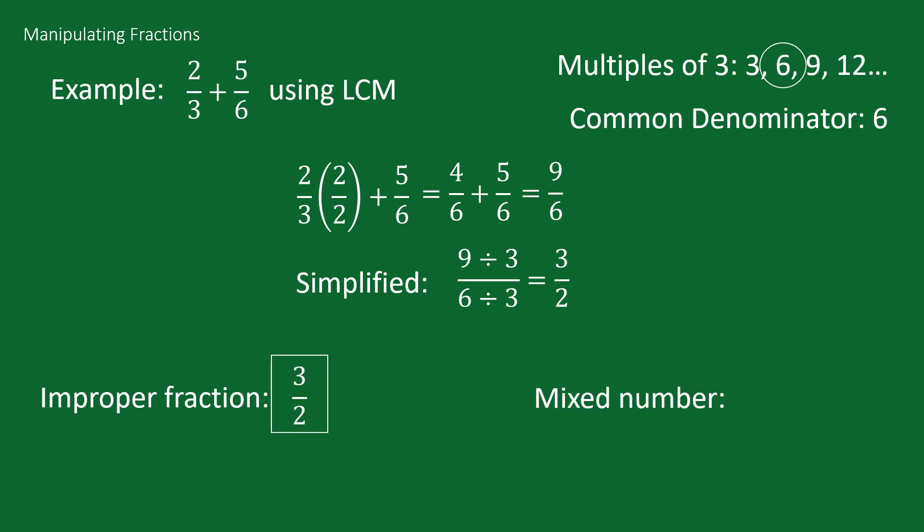To write as a mixed number, see how many times the denominator goes into the numerator and put the remainder on top of the denominator. 2 goes into 3 one time evenly, and 3 minus 2 gives us a remainder of 1. Our mixed number will be one and a half.